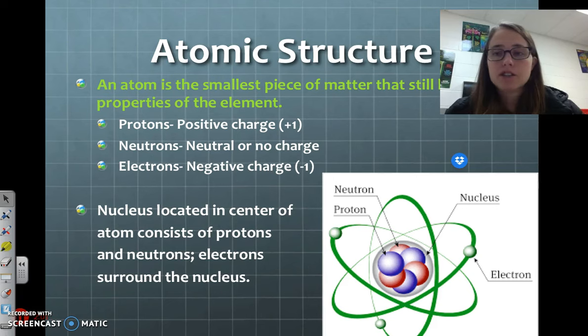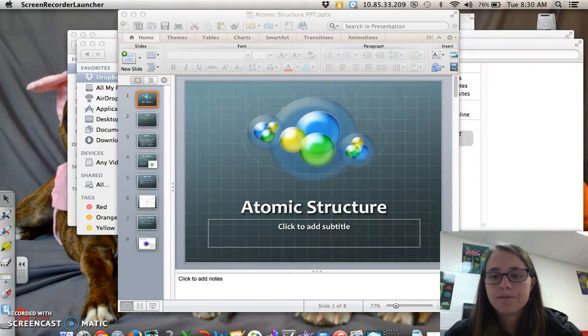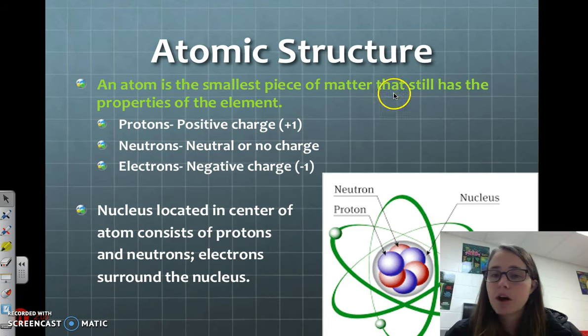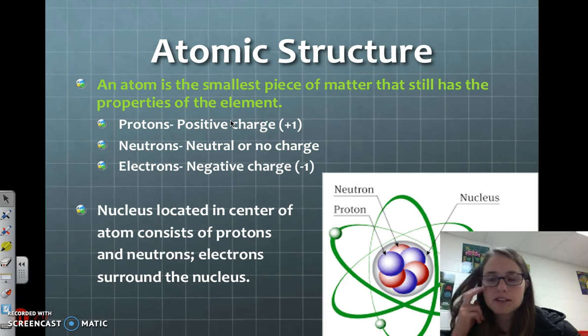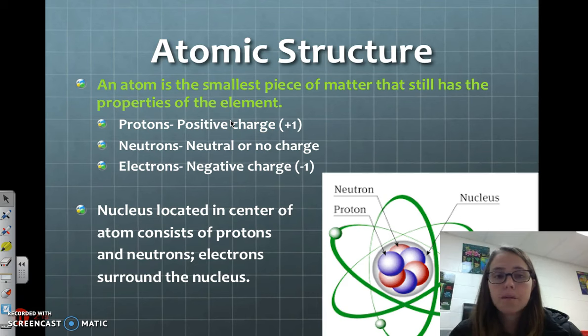An atom is the smallest piece of matter that still has the properties of the element. In other words, I could test a huge piece of a single thing, like a big bar of iron, and it would have a certain set of properties or characteristics. And then I could test a single atom of iron, and it should have those exact same properties.